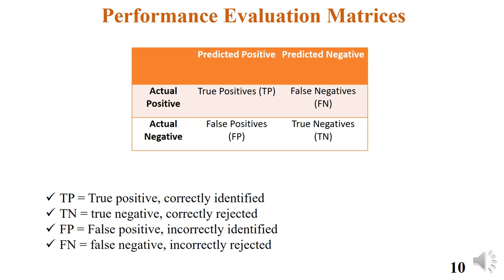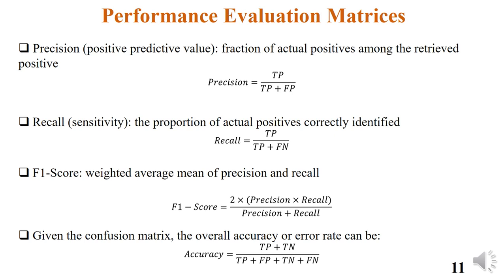This is a simplified confusion matrix with four aspects: true positive, true negative, false positive, and false negative. These four aspects are used to calculate the performance evaluation metrics used to evaluate the neural networks in this study. Since we have an imbalanced dataset, rather than simply depending on accuracy, we also consider precision, recall, and F1 score. The four equations provided in this slide are used to calculate those metrics.